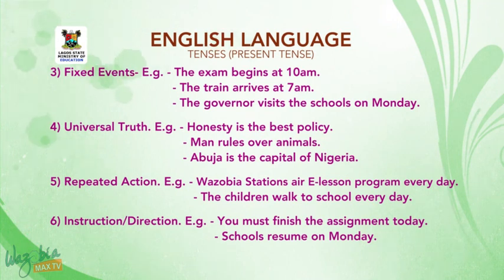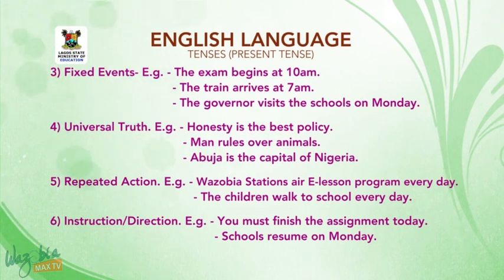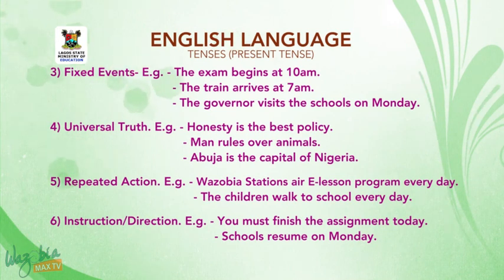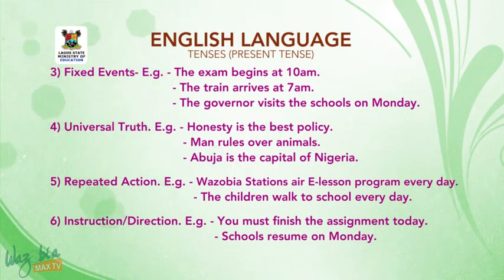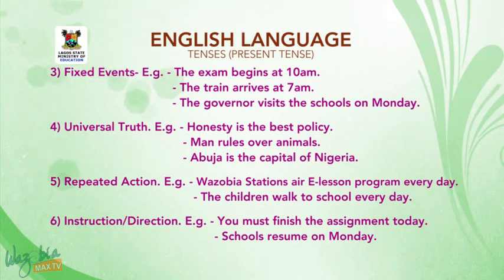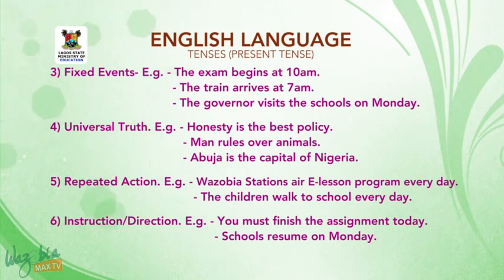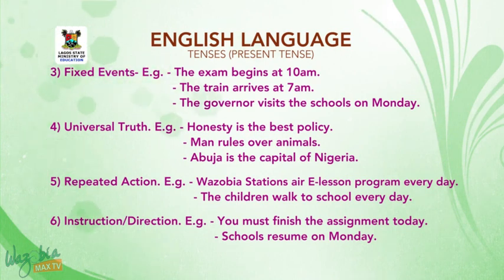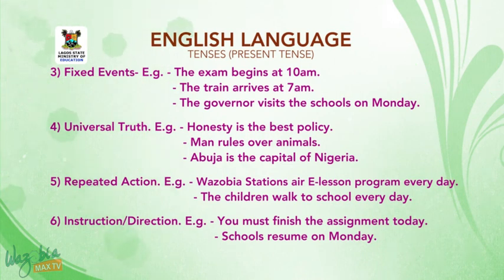4. It can be used to describe universal truth. For example: Honesty is the best policy. Man rules over animals. Abuja is the capital of Nigeria. 5. We can also use it to describe repeated action — for example: The children walk to school every day.